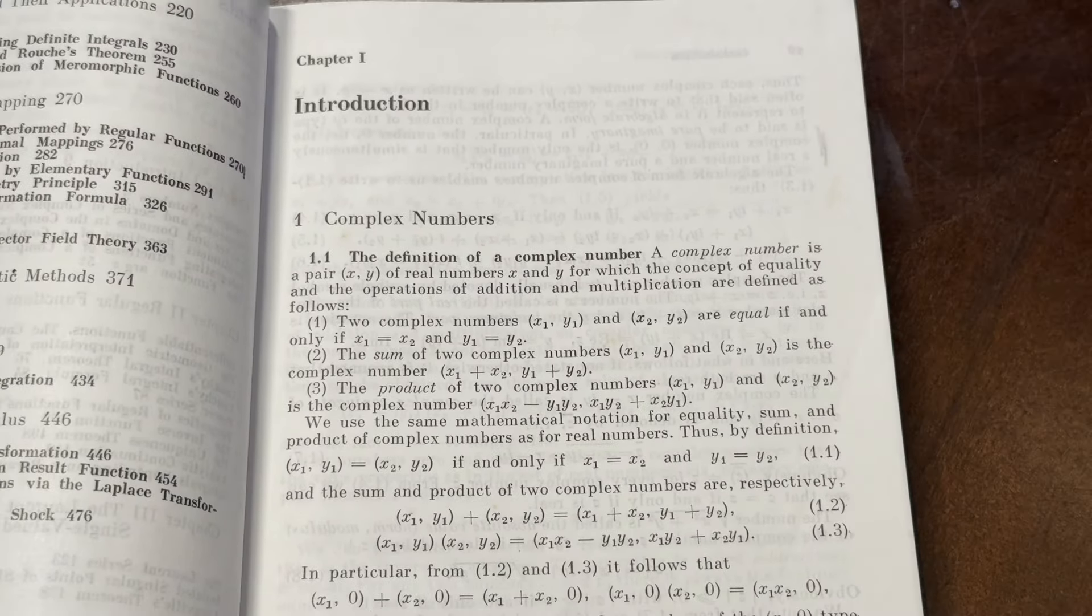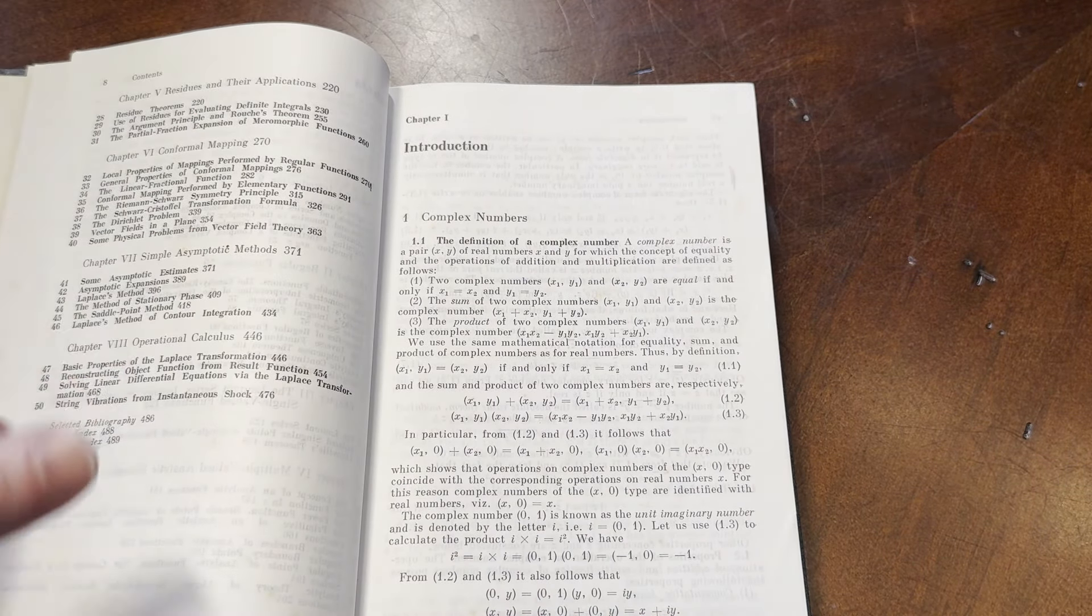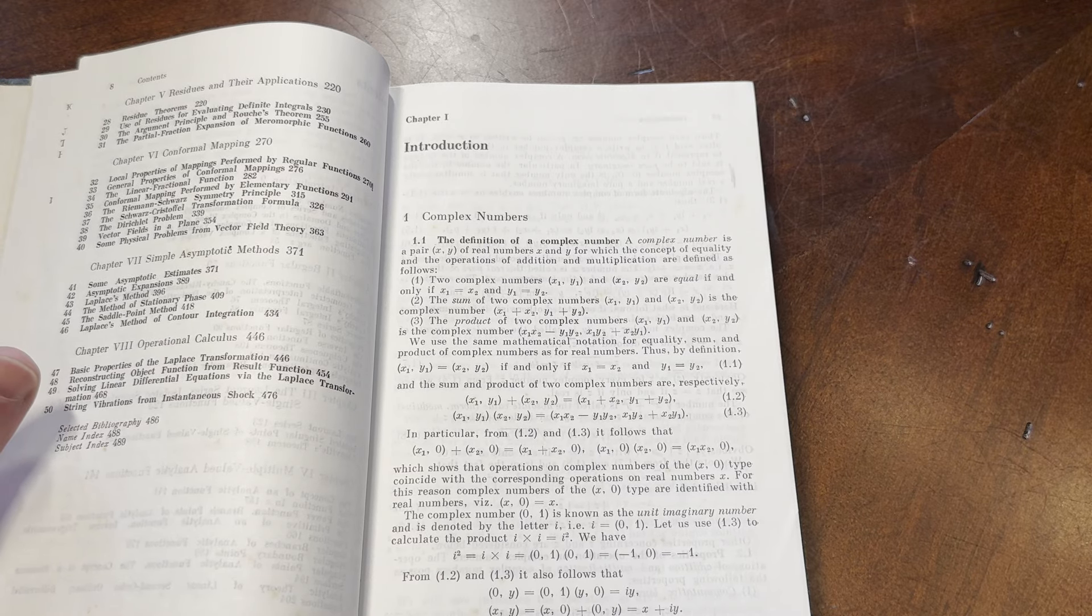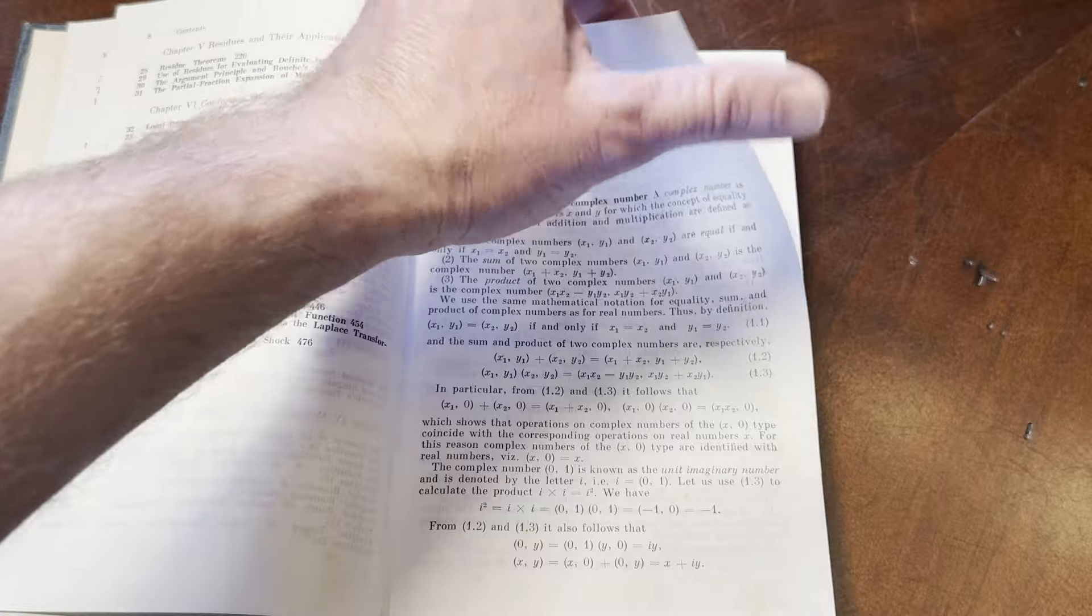Yeah, so you might be thinking, well, don't complex numbers have an i? Like, you know, a plus bi. That's what a complex number is. Yes, but you can also think of them as ordered pairs, right? So it's the same principle.